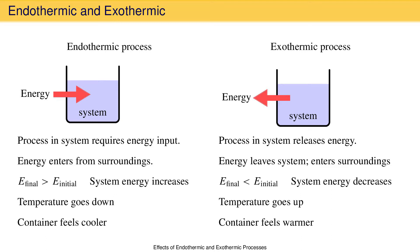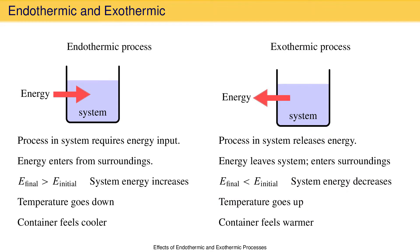There's an apparent contradiction here as well. How can it be true that the energy of the system decreases but the temperature goes up? On the other hand, it makes sense that you would perceive the temperature of the beaker to go up because energy enters the beaker and then your hand, which are both part of the surroundings, when it leaves the system as the exothermic process takes place. Again, this just appears to be a contradiction, not an actual contradiction. Let's see if we can clear this up.